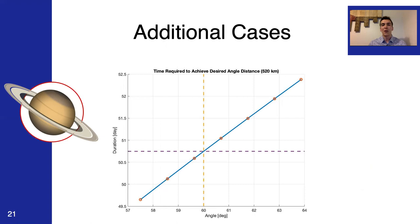This can be additionally applied to other cases as well. You know, 60 degrees is really just an arbitrary value. You can see from this analysis here that there is a linear correlation between the desired angle and how long it would take. So, this analysis can be further extended to other cases as well.